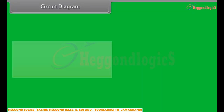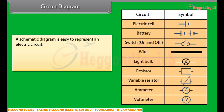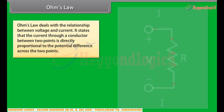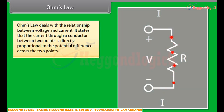A schematic diagram is easy to represent in an electric circuit. There are conventional symbols that you can use to represent most of the elements used in the circuit diagram. The symbols are shown. Ohm's Law deals with the relationship between voltage and current. It states that the current through a conductor between two points is directly proportional to the potential difference across the two points.